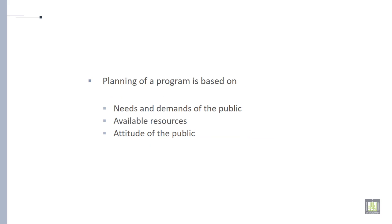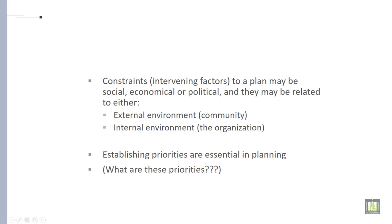Planning of a program is based on three things: the needs and demands of the public, available resources, and the attitude of the public. Constraints to a plan may be social, economical, or political. These are the three important constraints of planning, and they may be related to either the external environment or internal environment.